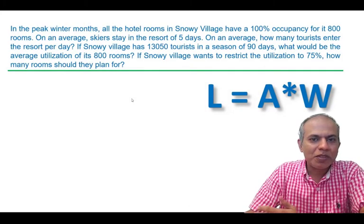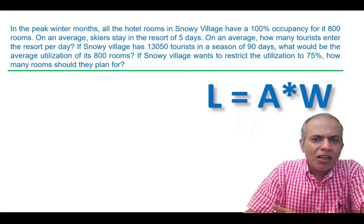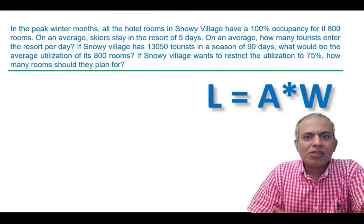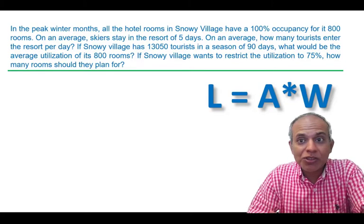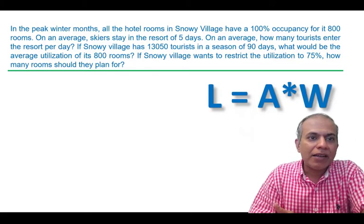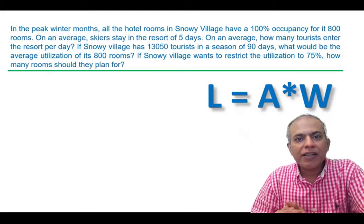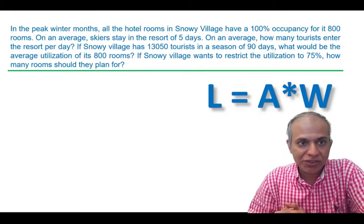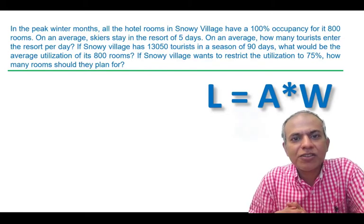Now that we can do simple elementary numerical problems using Little's Law, let's try to do something slightly more complex. This is a question about Snowy Village. They have 100% occupancy and 800 hotel rooms, and the skiers stay in those hotel rooms for five days on average. So how many tourists enter the resort per day?